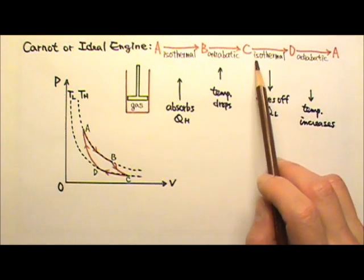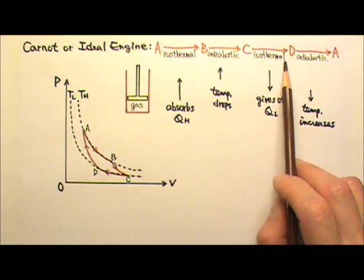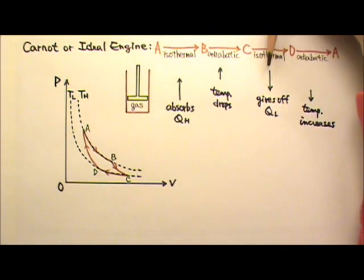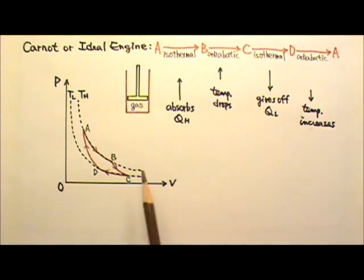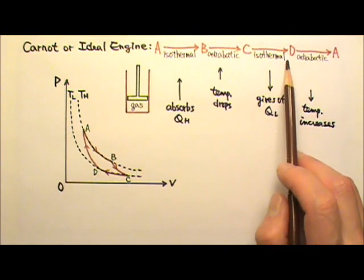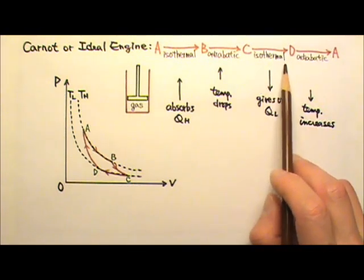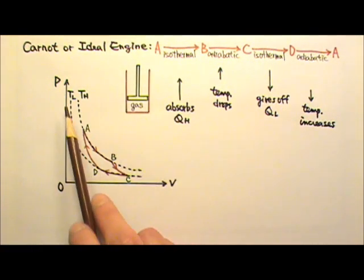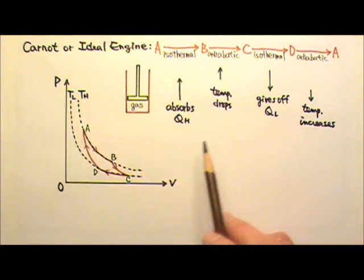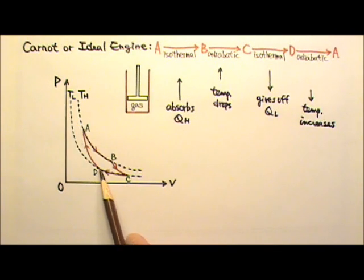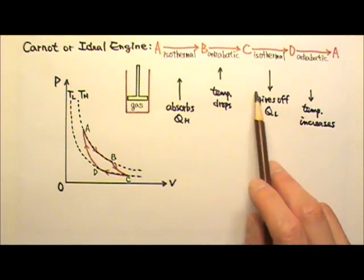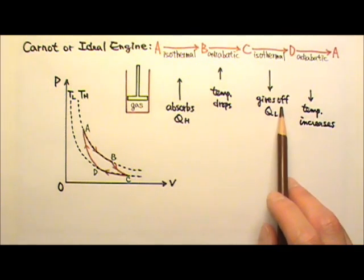Then we start another isothermal process. C to D, the gas gets compressed, the piston gets pushed down to compress the gas while keeping at a constant temperature, which means now the cylinder is in contact with a heat reservoir with temperature TL. When we compress the gas while keeping the temperature the same, the gas has to lose heat, so it gives off heat, QL.